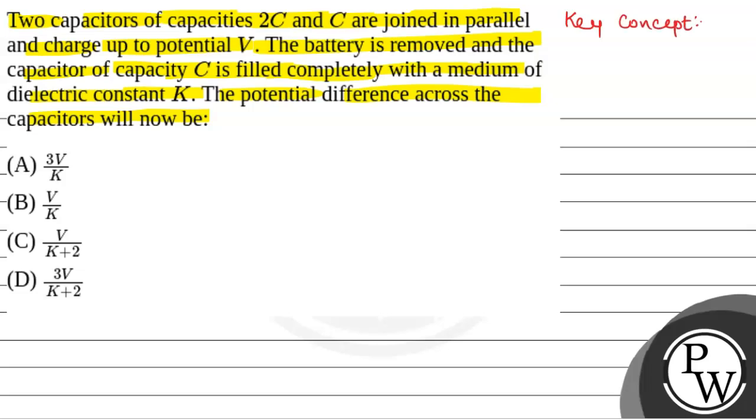The key concept that will be used to solve this question will be charge stored on a capacitor. Q is given by C into V, where C is the capacitance of the capacitor and V is the potential applied across the capacitor.